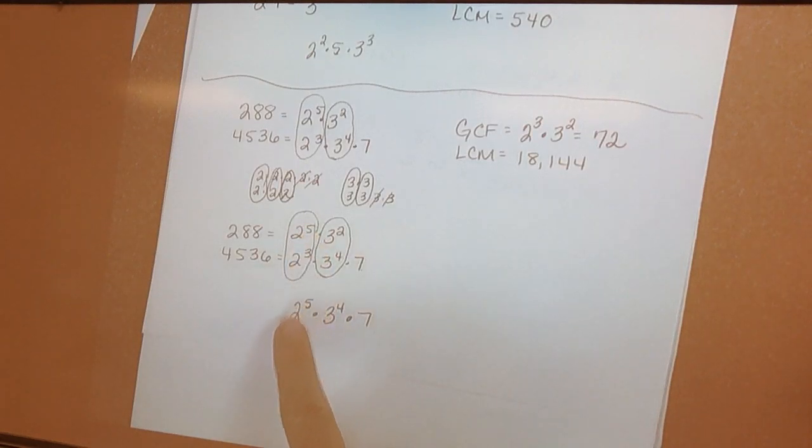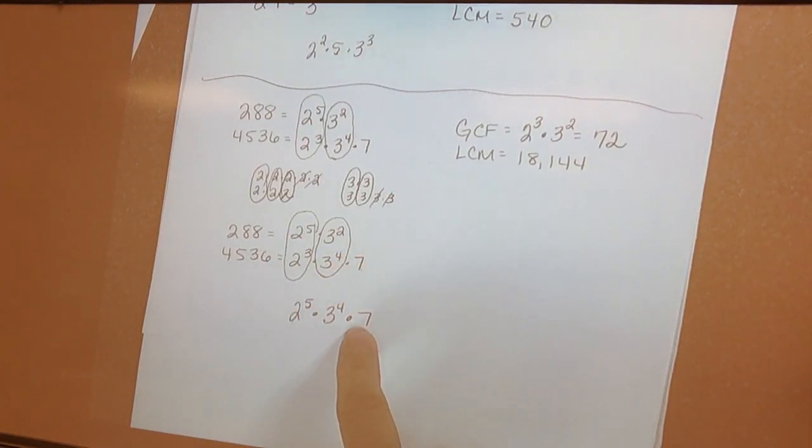So, 2 to the 5th power is bigger. I come over here to 3 to the 4th and 3 squared. 3 to the 4th is bigger. And then remember for LCM, I have to multiply everything else that is not in common.